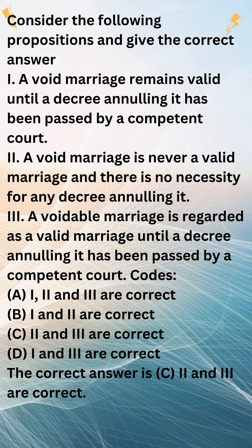Consider the following propositions and give the correct answer. 1. A void marriage remains valid until a decree annulling it has been passed by a competent court. 2. A void marriage is never a valid marriage and there is no necessity of any decree annulling it. 3. A voidable marriage is regarded as a valid marriage until a decree annulling it has been passed by a competent court.